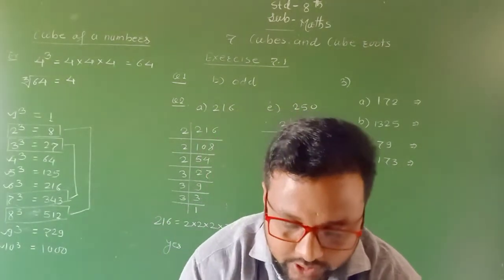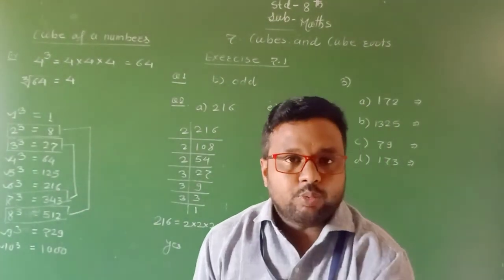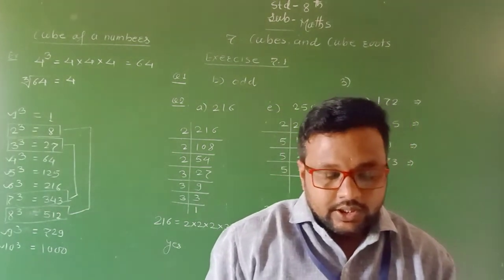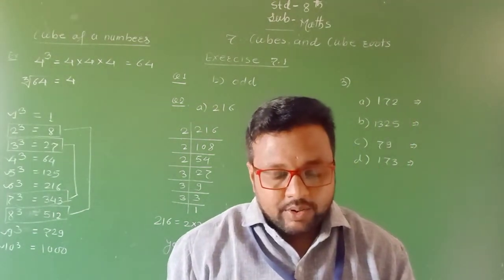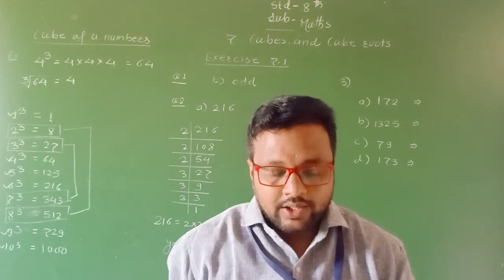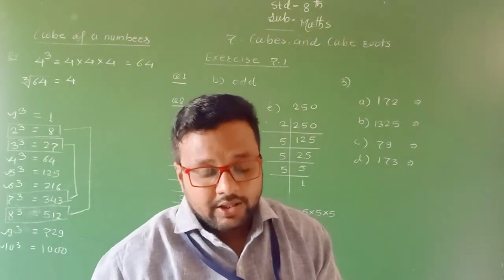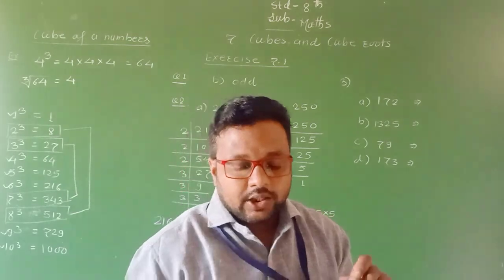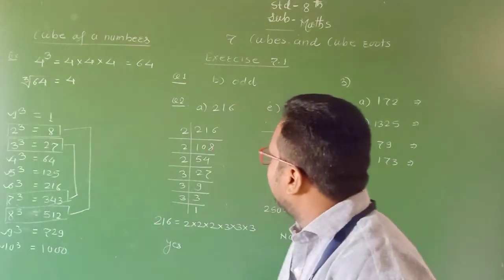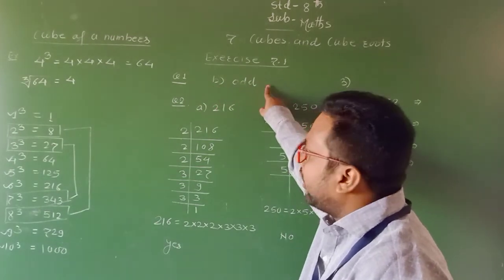Now we are going to see some questions from Exercise 7.1. The first question: the cube of an odd number is — options given are even, odd, maybe even or odd, or prime number. We know that the cube of an odd number is an odd number. Therefore, the answer is option B: odd.